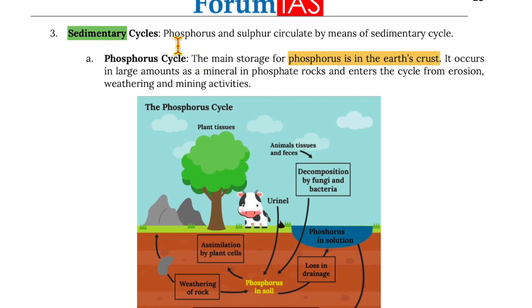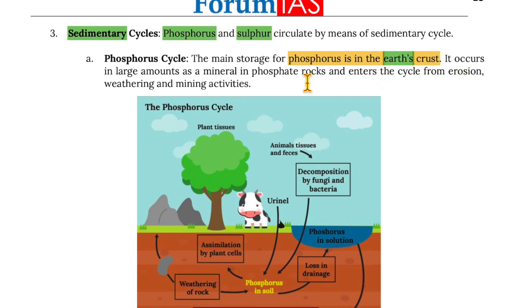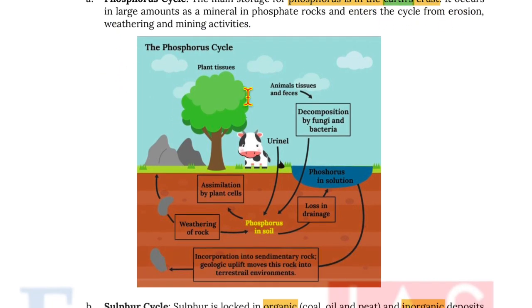Moving on to sedimentary cycles: phosphorus and sulfur circulate by means of sedimentary cycles. In the phosphorus cycle, the main storage for phosphorus is the earth's crust. It occurs in large amounts as minerals in phosphate rocks and enters the cycle from erosion, weathering, and mining activities.